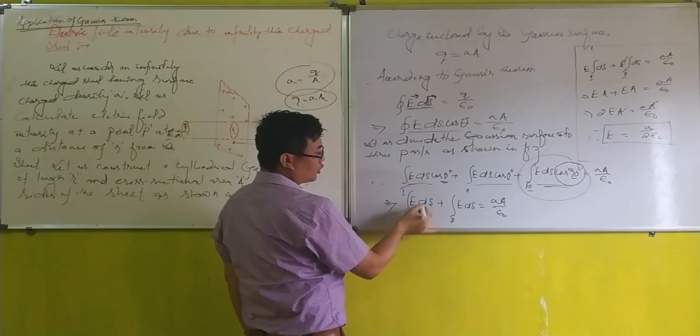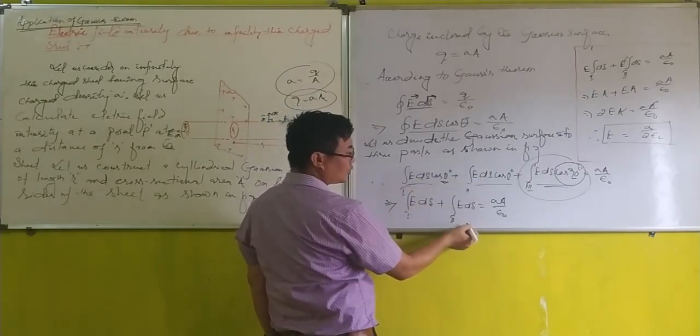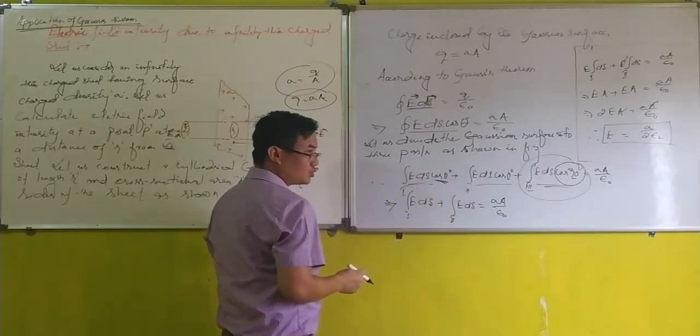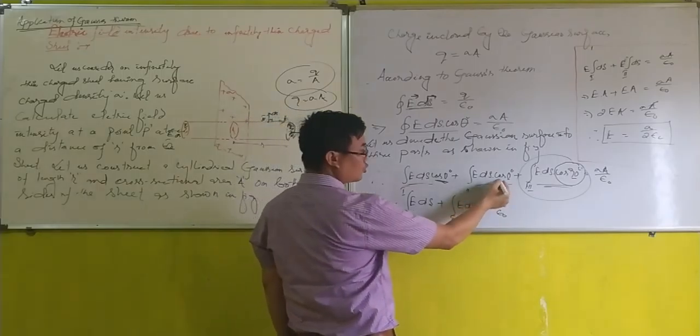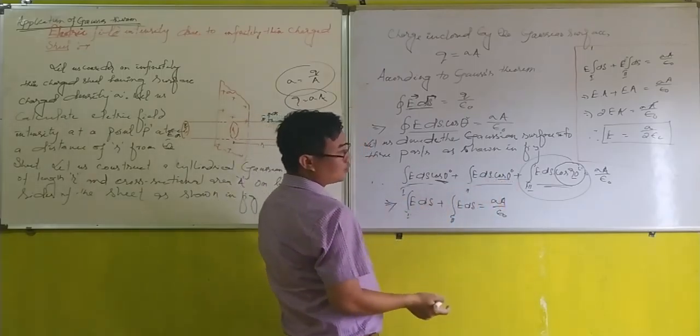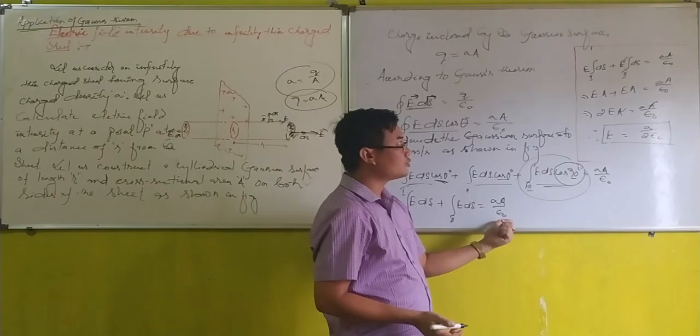In here, the first term without any change. Second term without any change. Because cos zero is one. Here cos zero is one. Then, we combine these two terms.